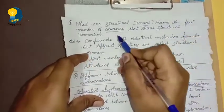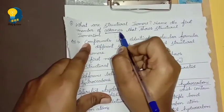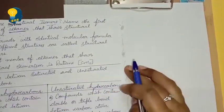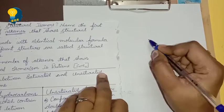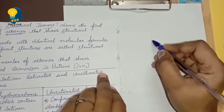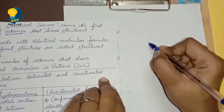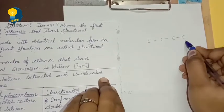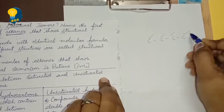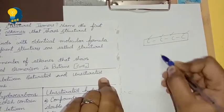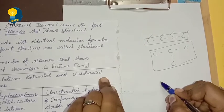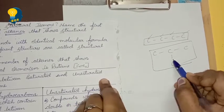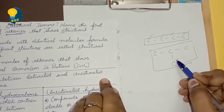So the second sub-question is: Name the first member of alkane that shows structural isomerism. Which member of alkane shows structural isomerism? Structural isomerism means having the same molecular formula but different structures. To have at least one isomer, minimum 4 carbon atoms are required. With 4 carbon atoms — methane, ethane, propane, butane — so it is butane. Butane is the longest straight chain. So the first member of alkane which shows structural isomerism is butane.